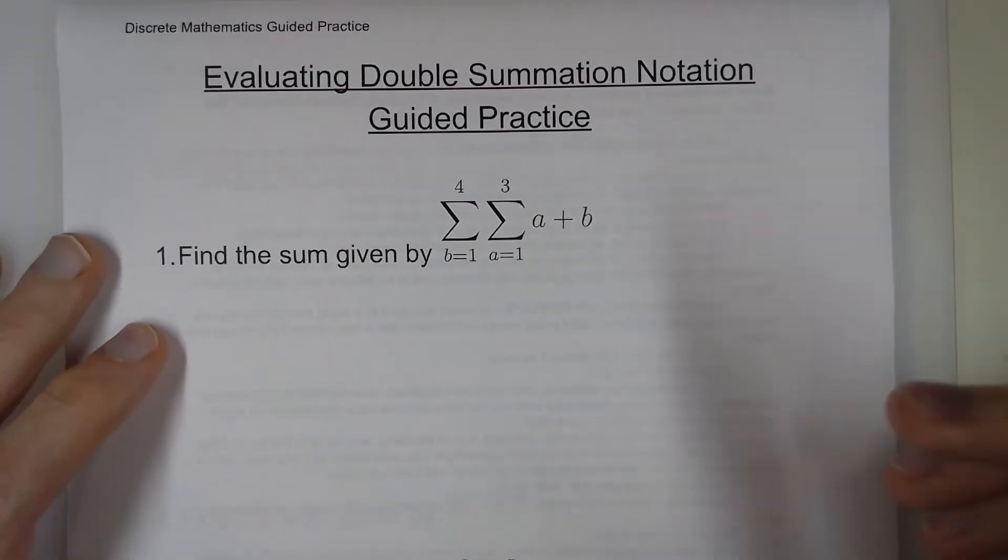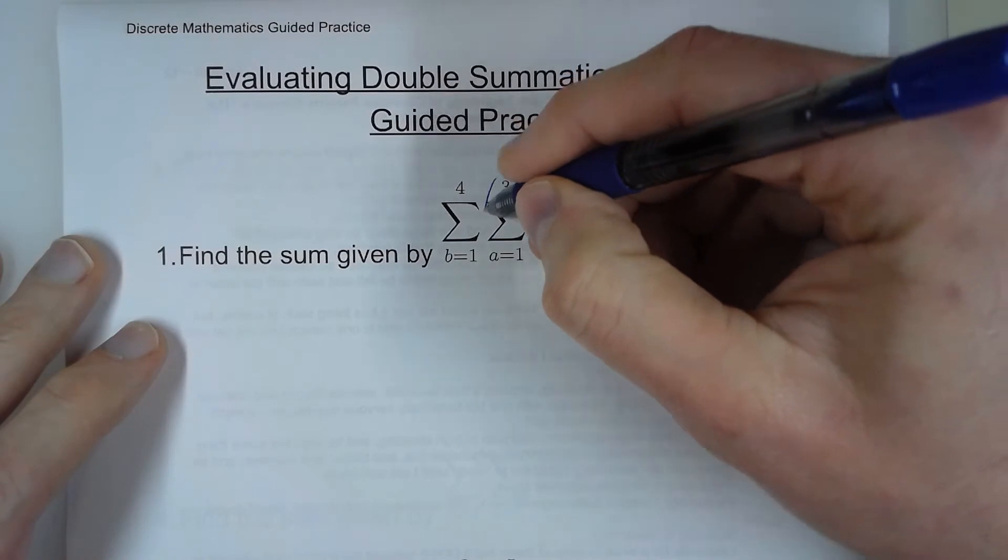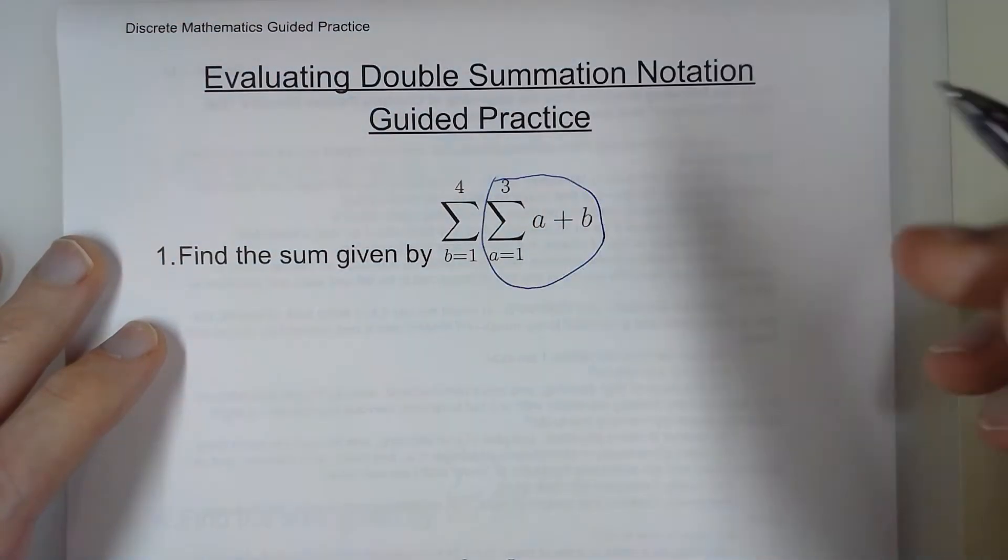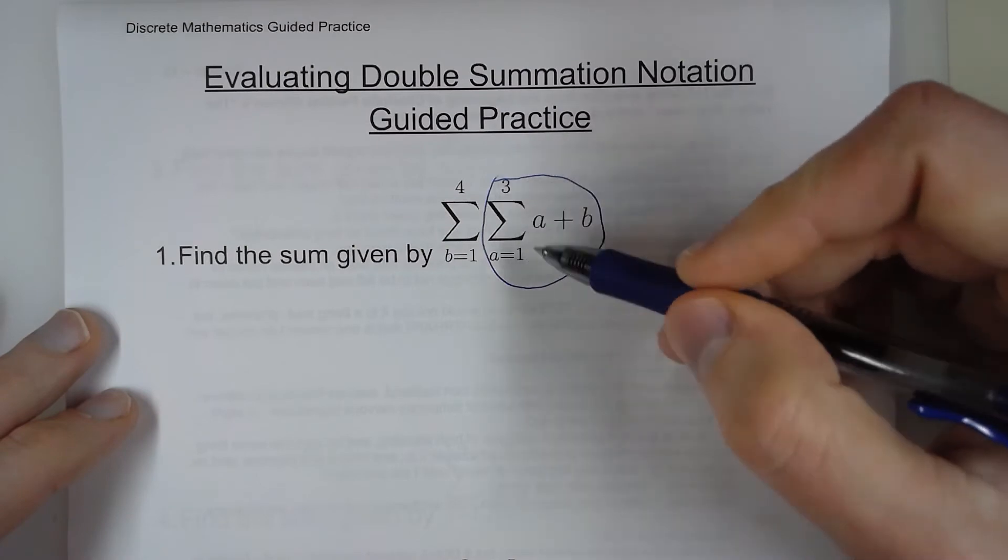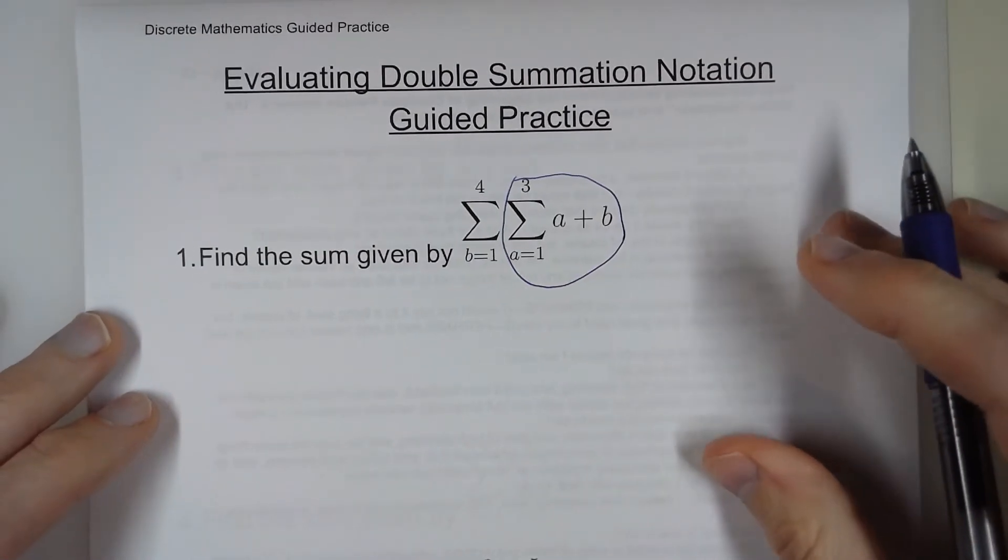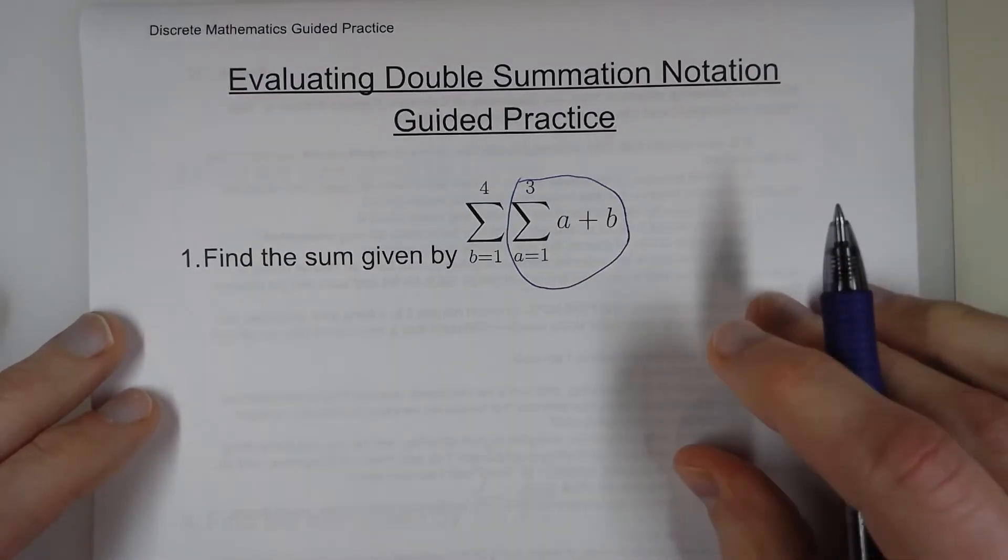And so for this first one, what I'm going to do is just focus on this summation right here. So what we're doing is we're plugging in 1 in for a, 2 in for a, and 3 in for a, and then adding up those results.